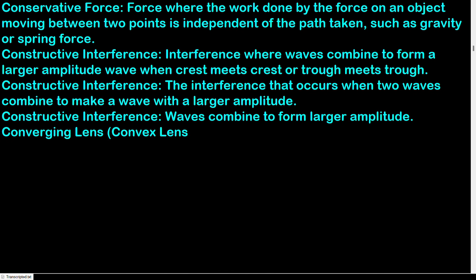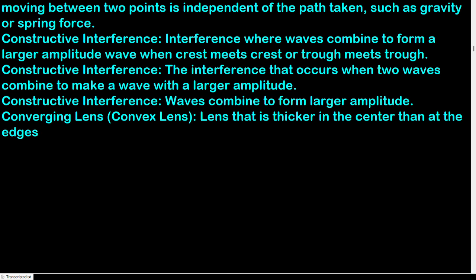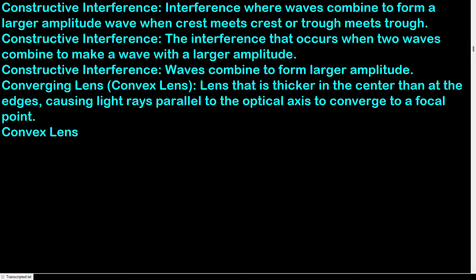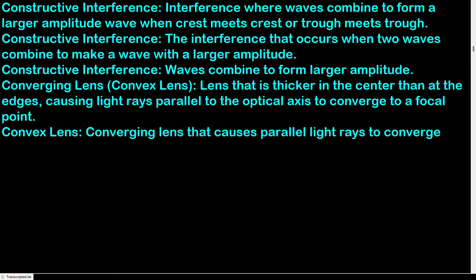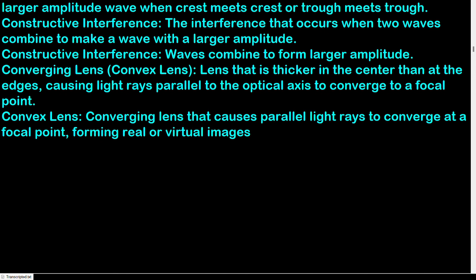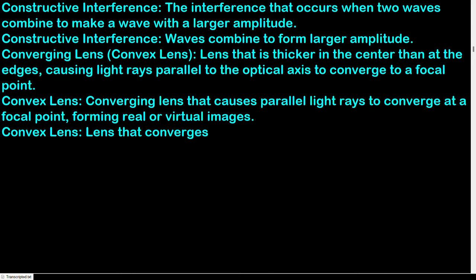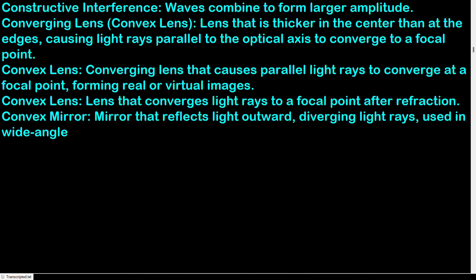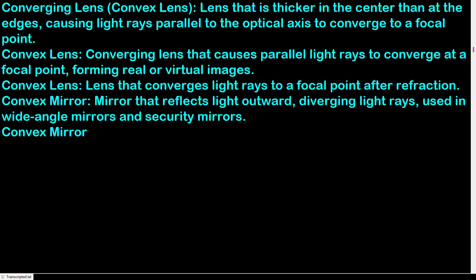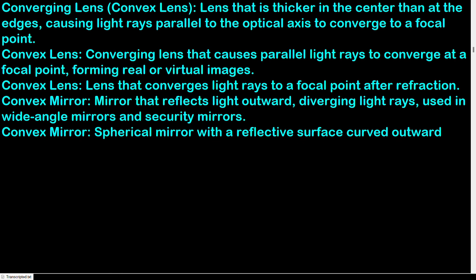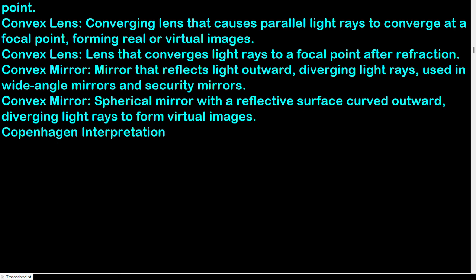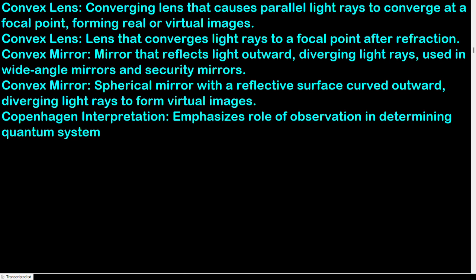Converging lens (convex lens): lens that is thicker in the center than at the edges, causing parallel light rays to converge to a focal point, forming real or virtual images. Convex mirror: spherical mirror with a reflective surface curved outward, diverging light rays to form virtual images — used in wide-angle and security mirrors. Copenhagen interpretation: emphasizes the role of observation in determining the quantum system state.